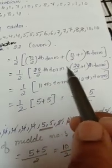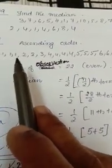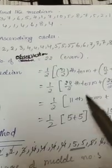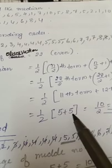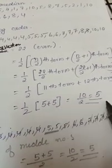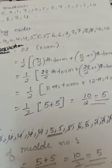22 instead of n, you put 22, cut it: 11 plus, 11th term is 1, 2, 3, 4, 5, 6, 7, 8, 9, 10, 11. The 11th term is 5, 12th term is also 5. Then 5 plus 5 is 10, divided by 2 is 5, that is the answer.